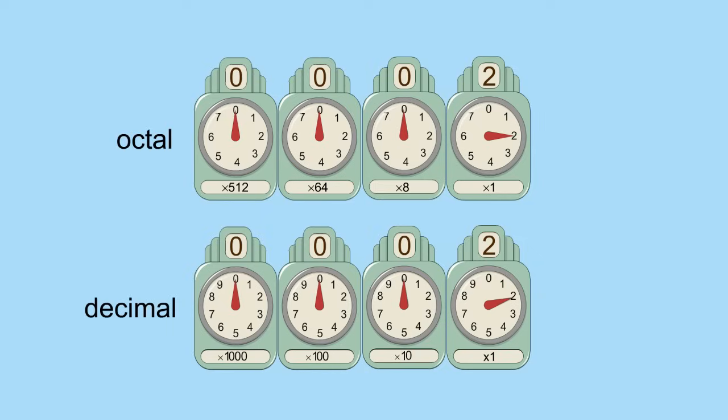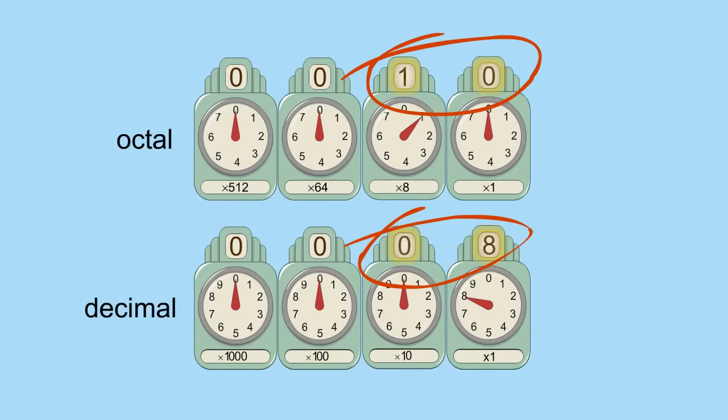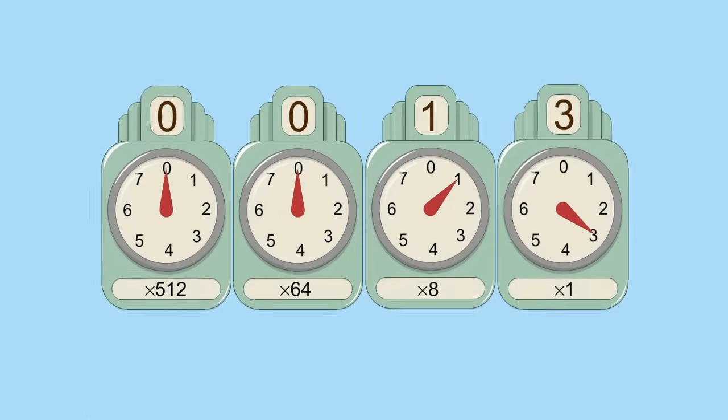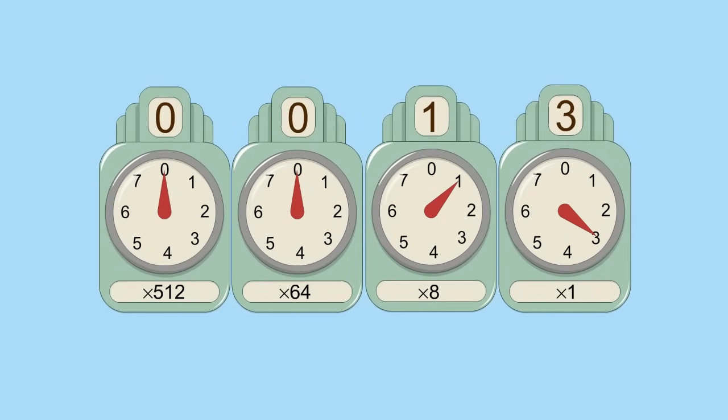Every number which can be written in decimal can also be written in octal, although after counting to seven, the way the quantities are represented is completely different. It is easy to convert an octal number to decimal when you consider how positional notation works.